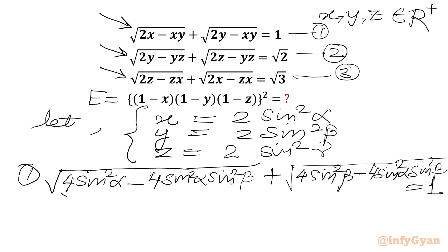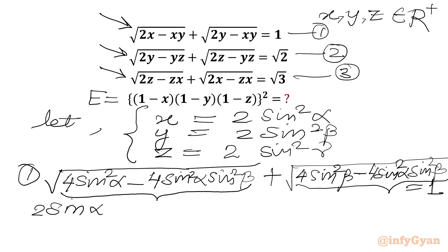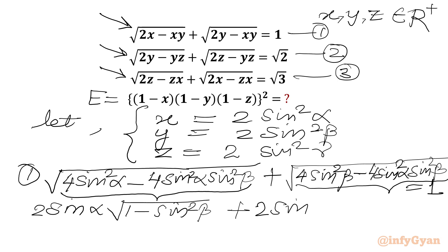From the first square root, 4 sin²α is common, and from the second, 4 sin²β is common. This comes out as 2 sin α · √(1 − sin²β) plus 2 sin β · √(1 − sin²α), equal to 1.